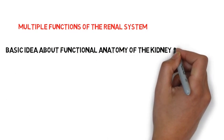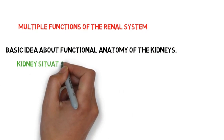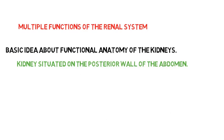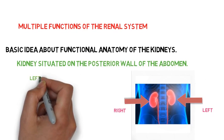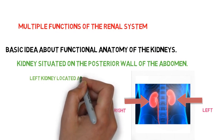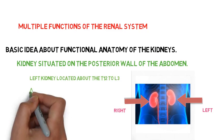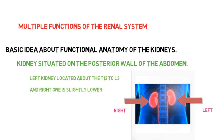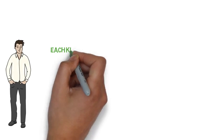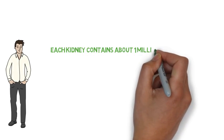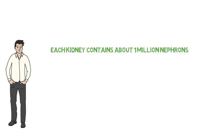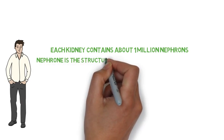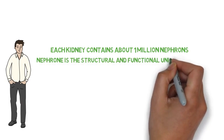Two kidneys are situated on the posterior wall of the abdomen. The left kidney is located above the T12 to L3 vertebra, whereas the right is slightly lower due to displacement by the liver. Each kidney contains about 1 million nephrons, each of them capable of forming urine.